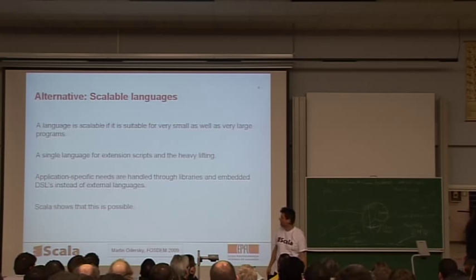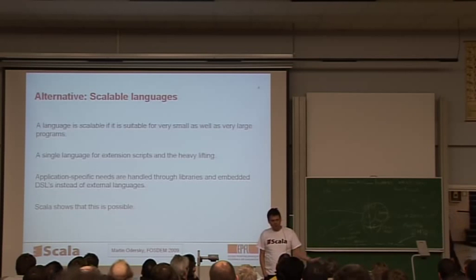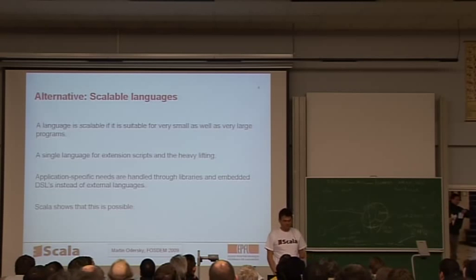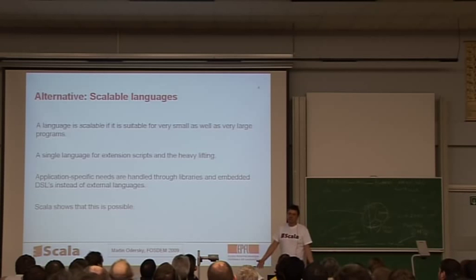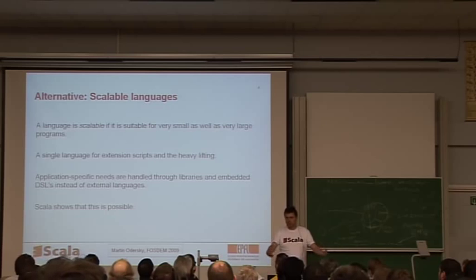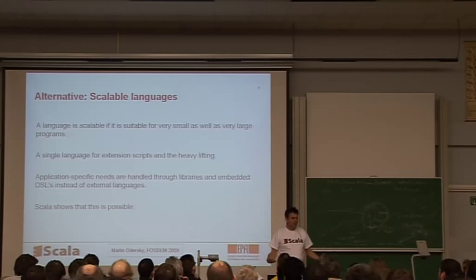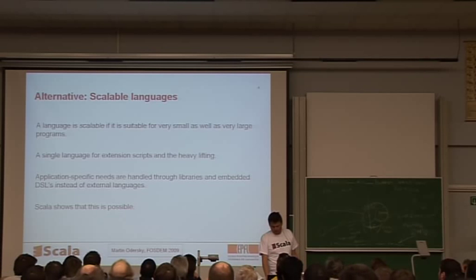So the alternative would be to say, well let's look at languages that are more scalable, that are more suitable for both very small as well as very large programs. And the idea would be to have a single language in which you can do the heavy lifting on one side and the extension scripts on the other side. So if you have specific needs in your application, then instead of an external domain-specific language or a scripting language, you would create an internal or hosted domain-specific language, which is implemented just as a library in your host language, and the requirement for that is that your host language is very, very expressive. So in Scala we've shown that this approach is in fact possible.